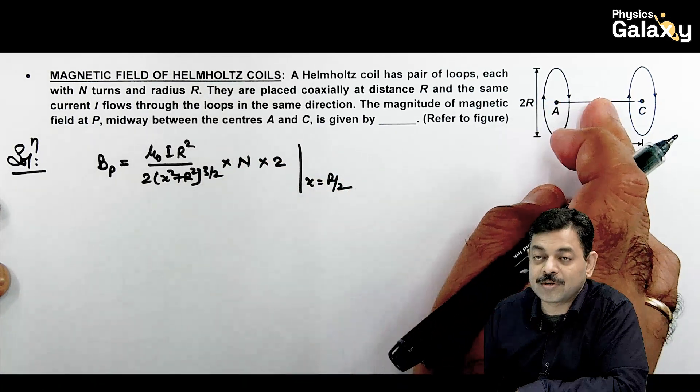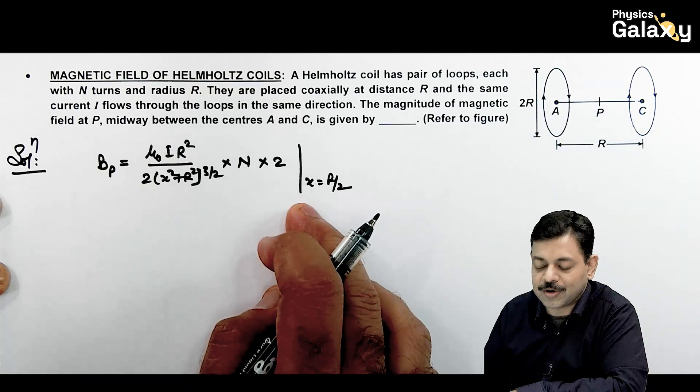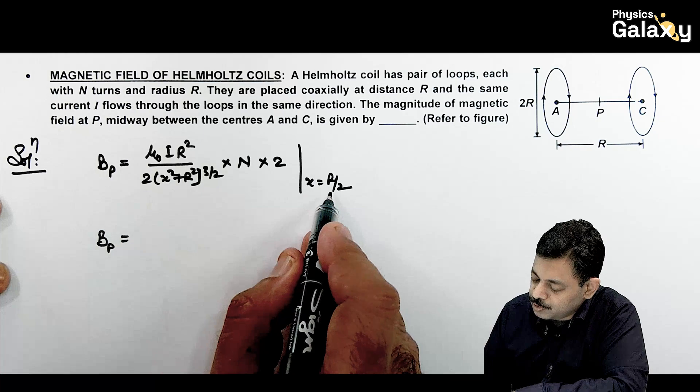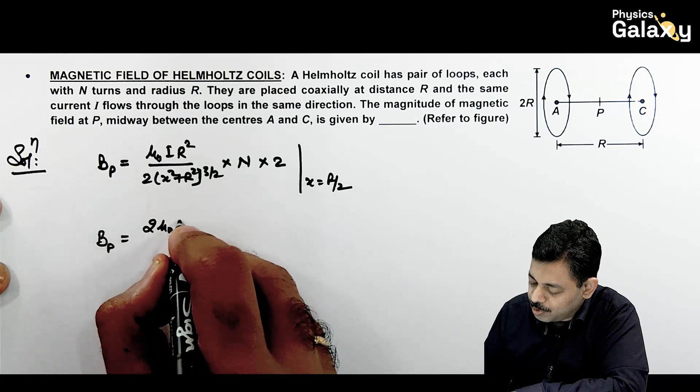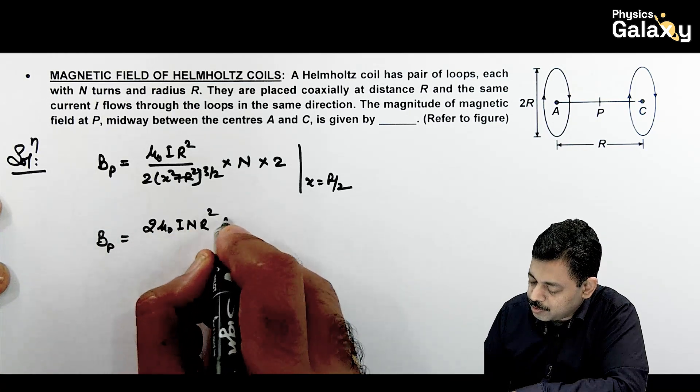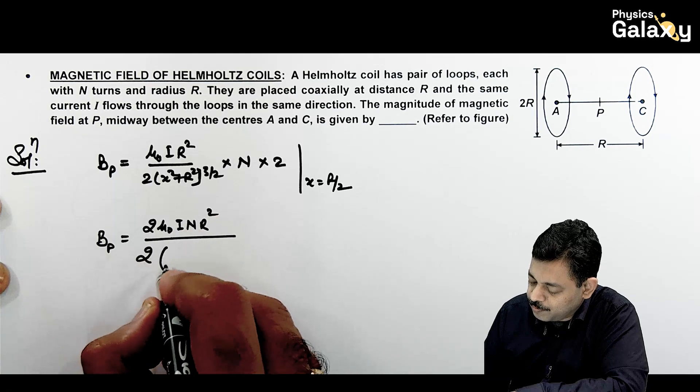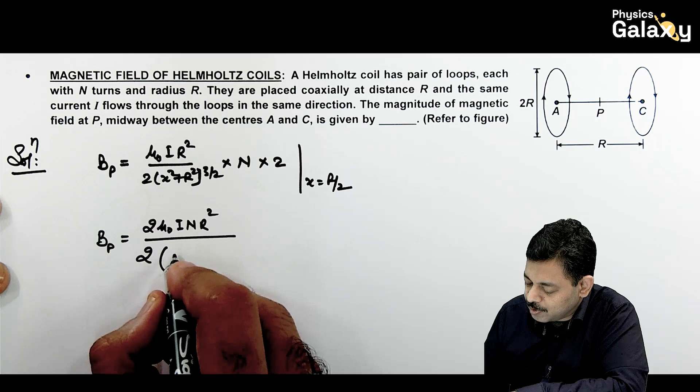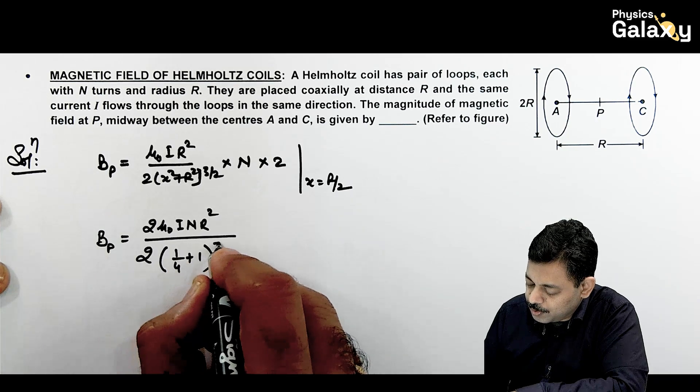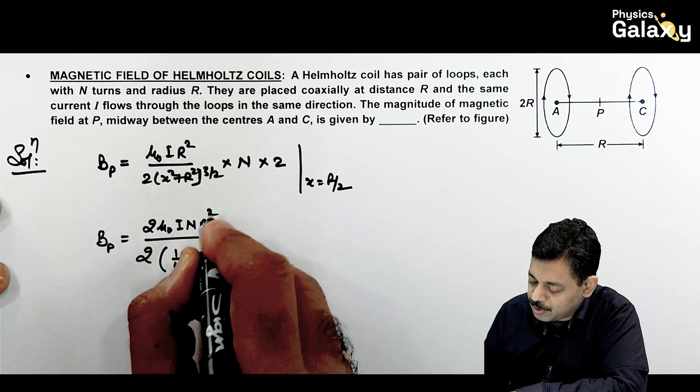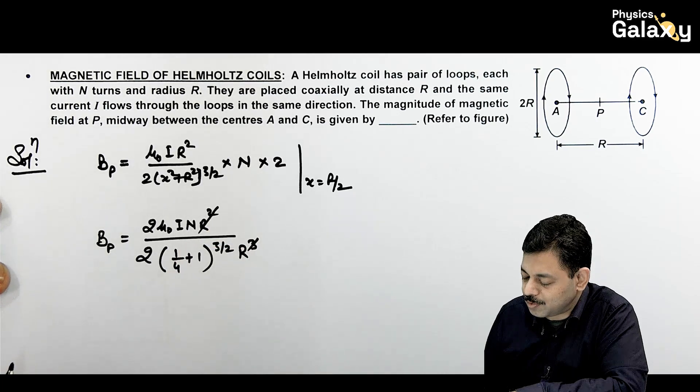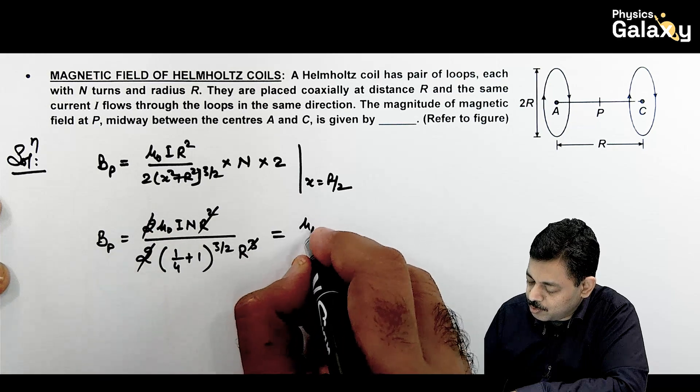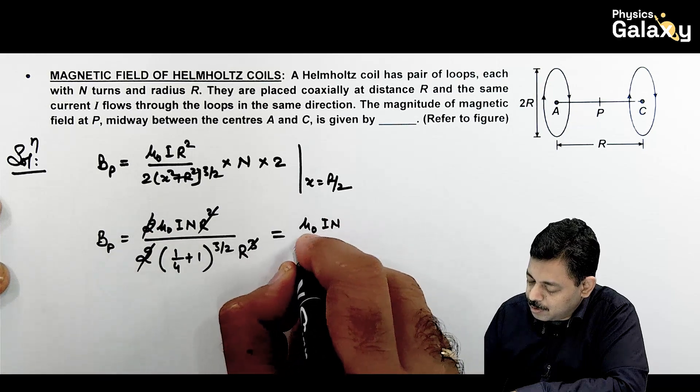If we substitute the values carefully, x becomes r by 2, so this will be 2 mu naught i n r squared divided by 2 times (r squared by 4 plus 1) to power 3/2 times r cube. This can be taken out as 1/4 plus 1 to power 3/2 multiplied by r cube. Here r square gets cancelled out. If we go further, 2 also gets cancelled out.